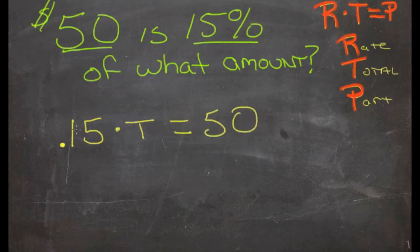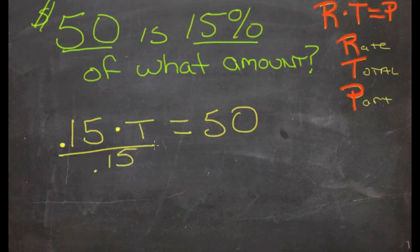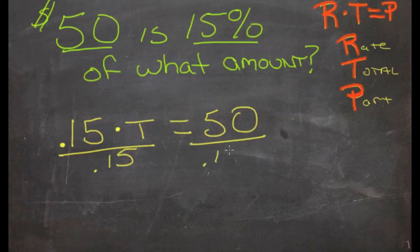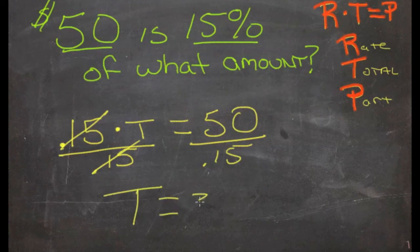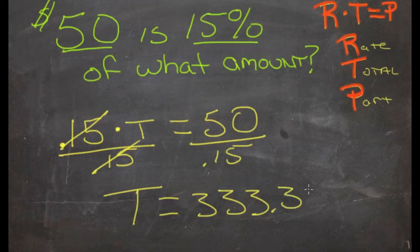To solve for t, we need to get rid of this 15%. We have 0.15 times t, so we'll divide both sides by 0.15. These will cancel, and we have t equals $333.33.